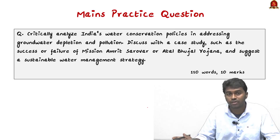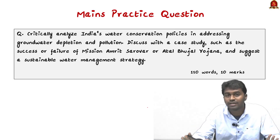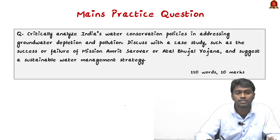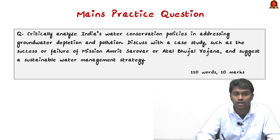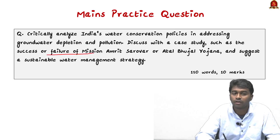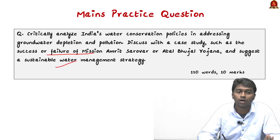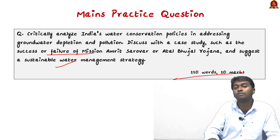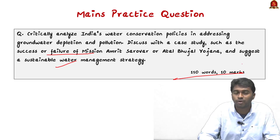In summary, we discussed water conservation in India — challenges, government measures, and the current water scenario. As a Mains practice question: Critically analyze India's water conservation policies in addressing groundwater depletion and pollution. Discuss with a case study such as the success or failure of Mission Amrit Sarovar and Atal Bhujal Yojana, and suggest a sustainable water management strategy. This is a 10-mark question requiring around 150 words. Post your answer in the comments for review.